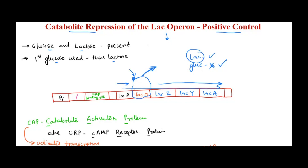That control is called positive control. Why it is called catabolite repression or positive control — these two terms will be clear towards the end of the video. We need to understand the whole concept first, including some new terms that are easy to understand. Everything will come together, so let's begin and understand what catabolite repression is.